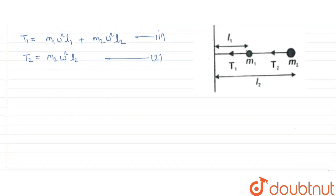Dividing equation 1 with equation 2, we get T1 by T2, which we have to find, where T1 is M1 omega square L1 plus M2 omega square L2 upon M2 omega square L2. We will take omega square common and cancel from numerator and denominator, and we will also take L1 common.